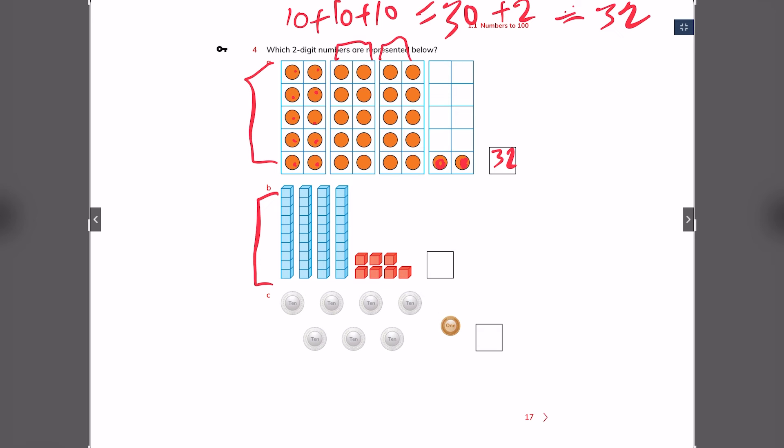These building blocks are also 10 each. So, 10 plus 10 is 20, plus 10 is 30, plus 10 is 40, and now you count the single ones: 1, 2, 3, 4, 5, 6, 7. This is 47. Now, you do this exercise on your own and solve this one.